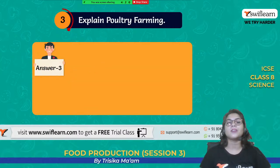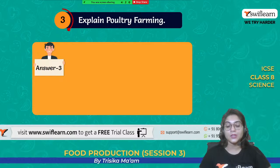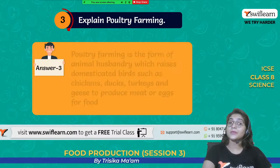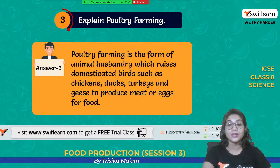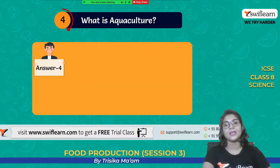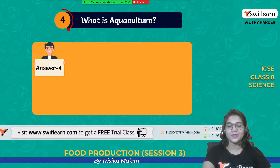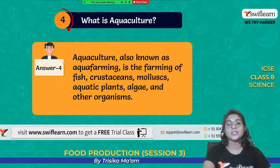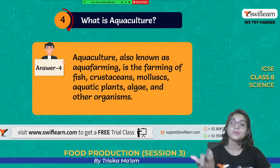What do you mean by poultry farming? It is the rearing and domestication of birds — like hens, ducks, turkey — so that we will get different eggs and meat from them. What do you mean by aquaculture? Aqua means water, so aquaculture is the culture of organisms in water — it can be fish, mollusk, different plants, algae, crustaceans like crabs, prawn, and all.